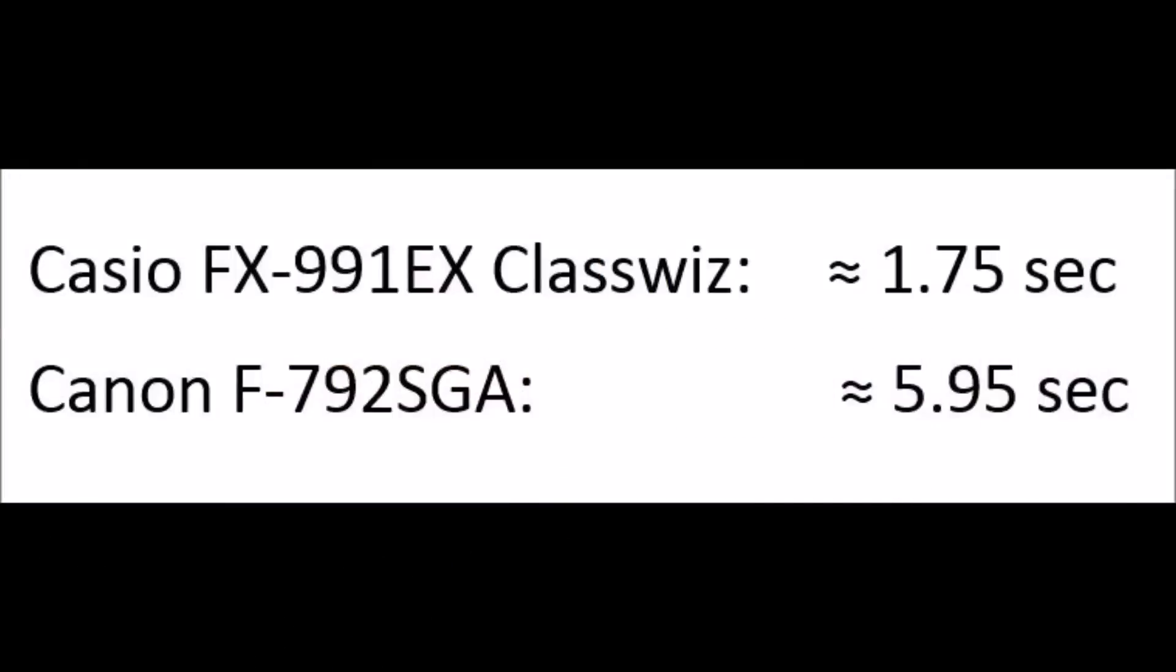The Classwiz is on the left and the Canon is on the right, and the results are 1.75 seconds for the Casio, 5.95 seconds for the Canon.